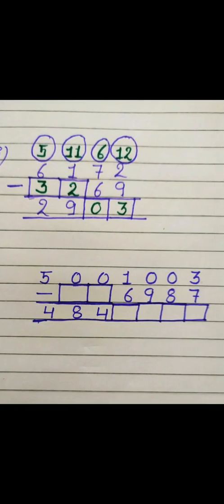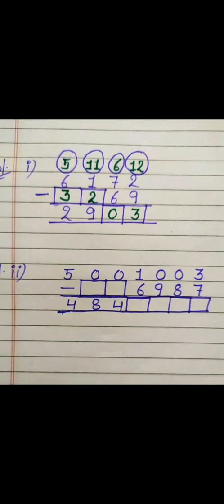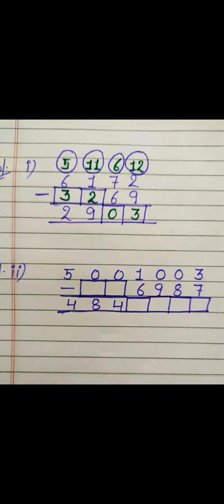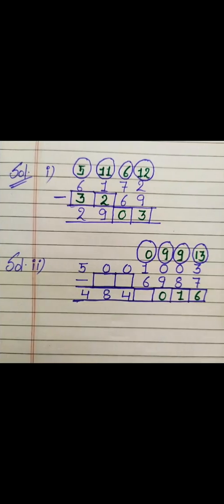Now we will do the same for the next question. First, replace the asterisks with boxes and start from the ones place. At the ones place we can't subtract 7 from 3, so this 3 will take borrow, becoming 13, and all the intermediate zeros become 9 while this 1 becomes 0. Then 13 minus 7 gives 6, 9 minus 8 gives 1, and 9 minus 9 gives 0.